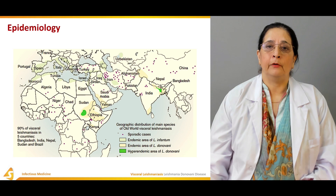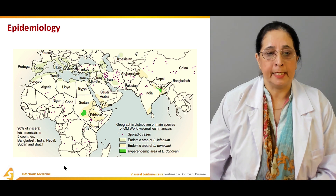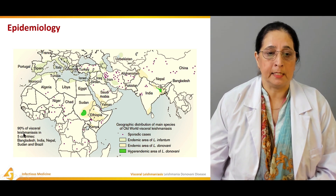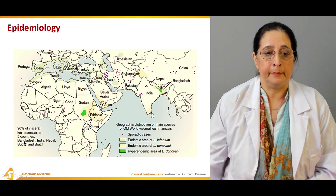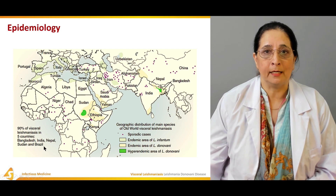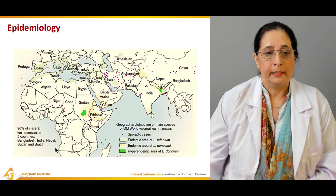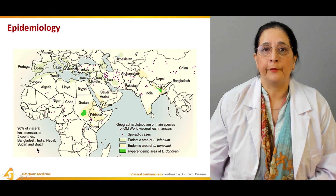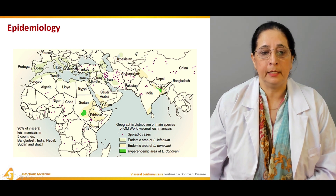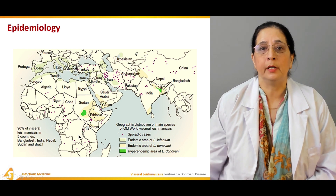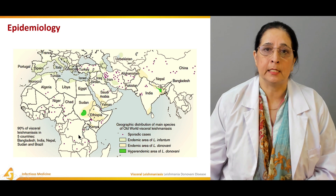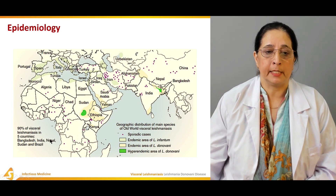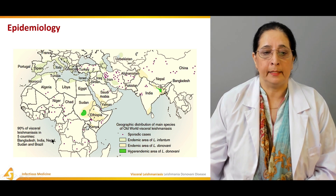Regarding the epidemiology of leishmaniasis, 90% of cases occur in five countries: Bangladesh, India, Nepal, Sudan, and Brazil. These are the countries where leishmaniasis is most common.